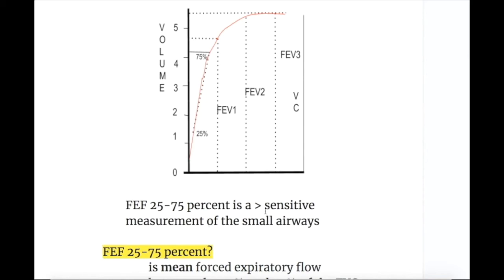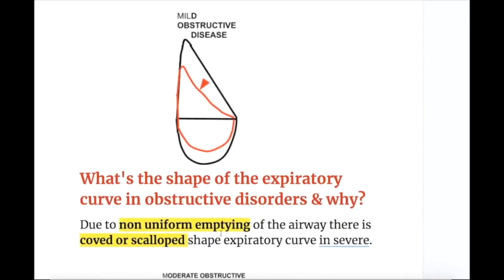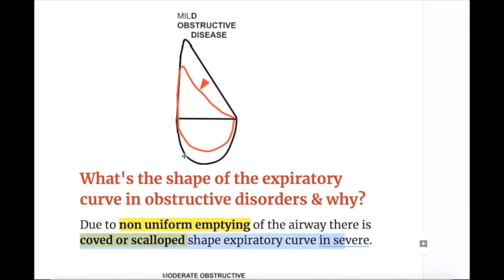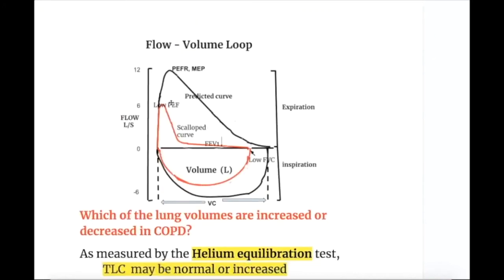FEF 25–75% is a more sensitive measure of small airway obstruction. In obstructive disorders, due to non-uniform emptying of airways, there is a concave or scalloped expiratory curve in severe cases. The black loop represents the normal curve, the red loop shows mild obstructive disease, and in moderate obstructive disease the concavity during expiration is increased on the red loop.